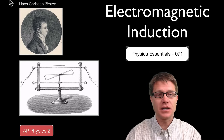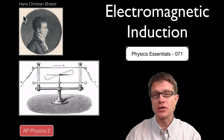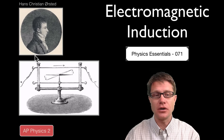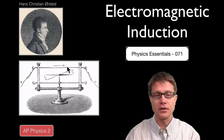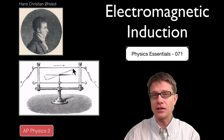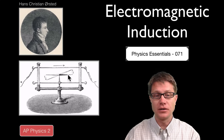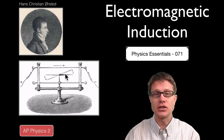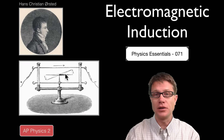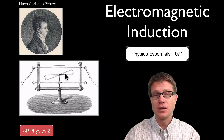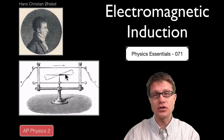Scientists like Hans Christian Orsted had already shown that if you have current in a wire like this, it creates a magnetic field. And that magnetic field could affect this compass needle, which is really a small little magnet. And so current can produce magnetic fields.